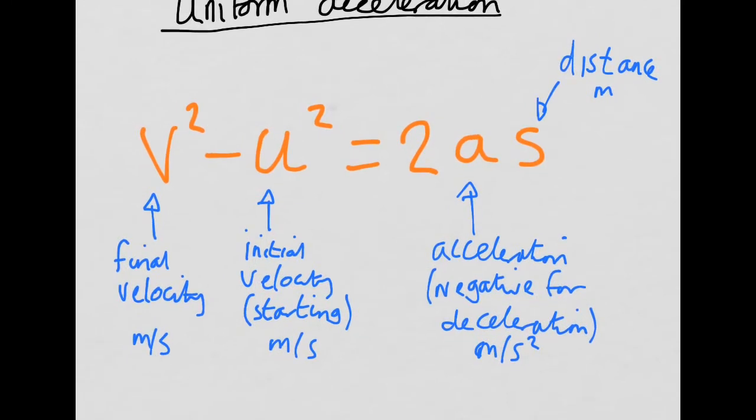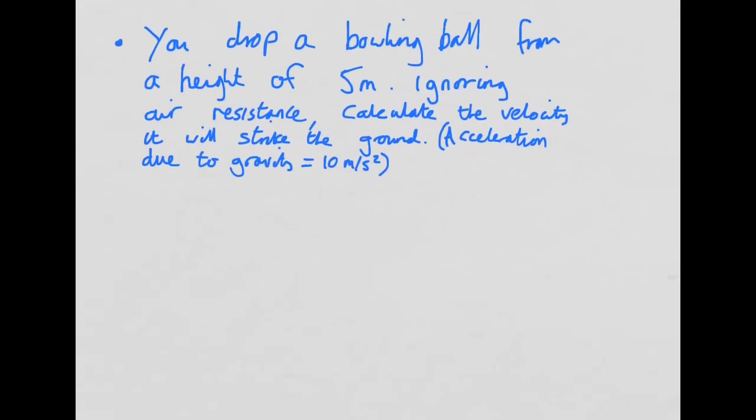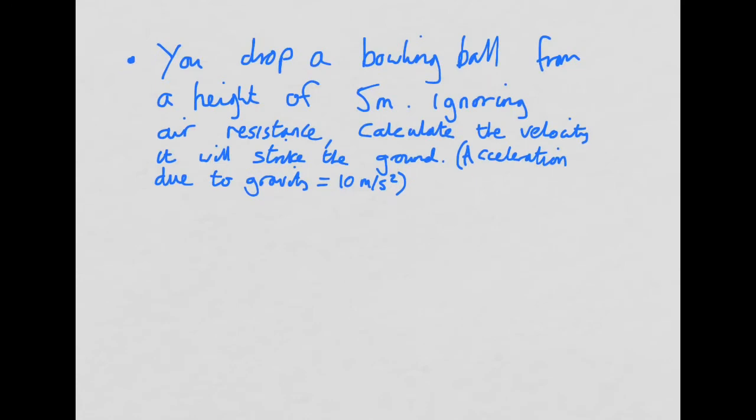However, you do need to learn how to apply it, and you need to know when to apply it as well. It's usually quite good to underline the numbers to start with. So if you drop a bowling ball from a height of 5 meters, so that's our distance, ignoring air resistance, calculate the velocity it will strike the ground if acceleration due to gravity is 10 meters per second.